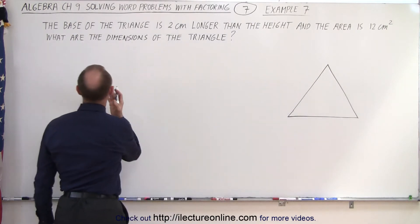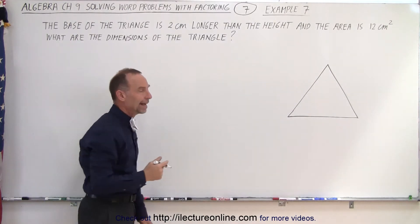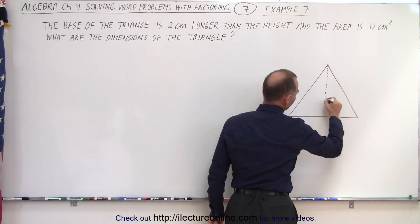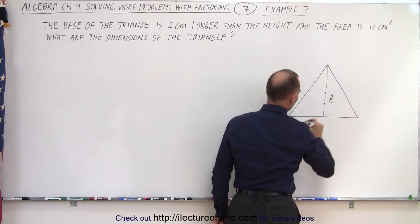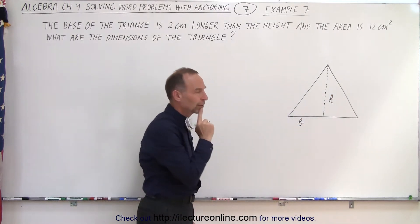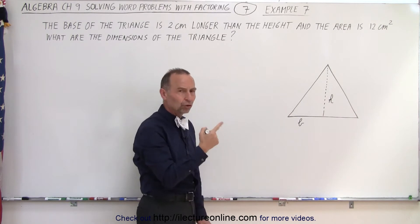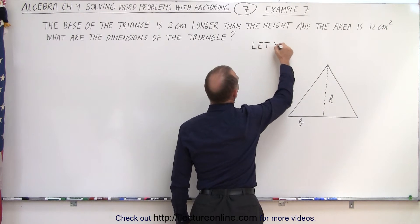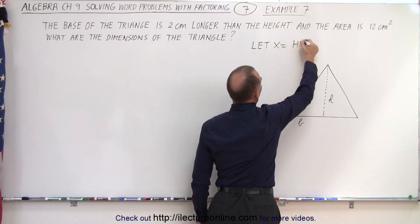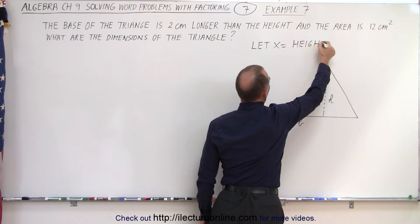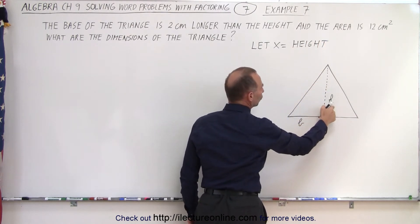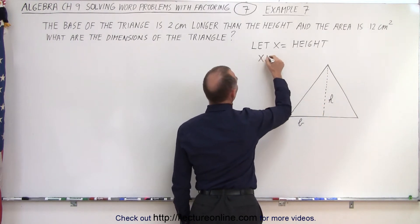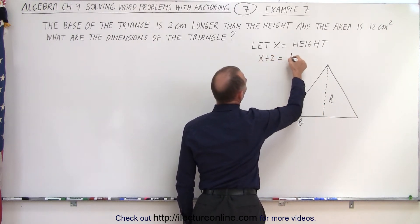They tell us that the base of the triangle is 2 centimeters longer than the height. So this here would be the height, and this here would be the base. Since the height is the shortest of the two dimensions, we can say let x equal the height. And since the height is 2 less than the base, the base must be 2 more than the height. So x plus 2 is equal to the length of the base.